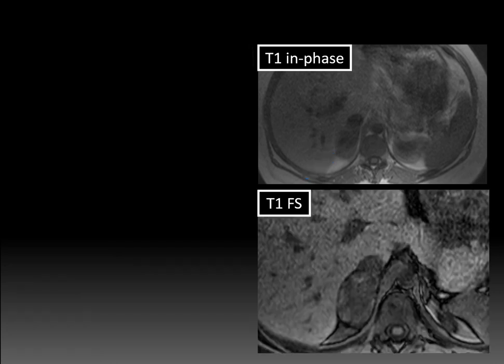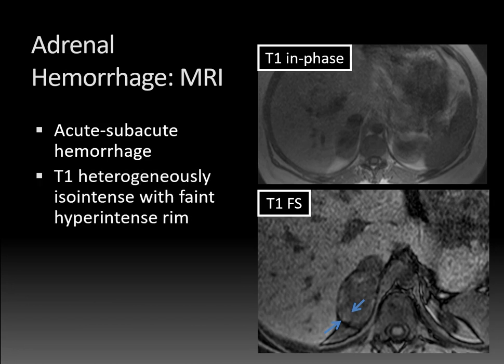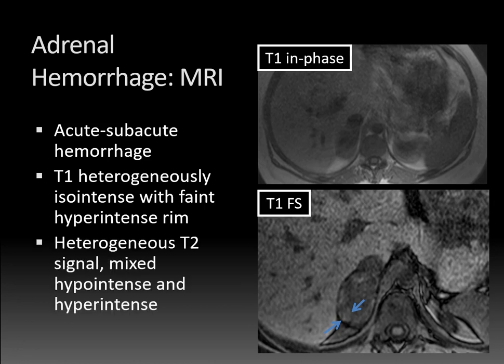Looking at the T1 fat-suppressed image, there is a faintly hyperintense rim on T1 images. Given the T2 signal, this is consistent with acute to subacute adrenal hemorrhage, which goes along with the patient's fairly acute presentation. The T1 heterogeneous isointense appearance with a faint hyperintense rim and heterogeneous mixed signal — the darker the T2, the more acute the hemorrhage.